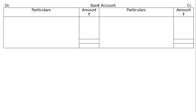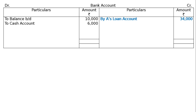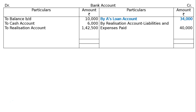In the bank account, to balance brought down: Rs. 10,000. Cash of Rs. 6,000 is deposited into the bank — bank account debited to cash account. To A's loan account: Rs. 34,000 paid directly. To realization account — assets realized: Rs. 1,42,500. By realization account — liabilities and expenses paid: Rs. 40,000. By A's capital account: Rs. 81,333. By B's capital account: Rs. 3,167. The totaling on both sides is Rs. 1,58,500 — both sides tally, confirming the answer is correct.